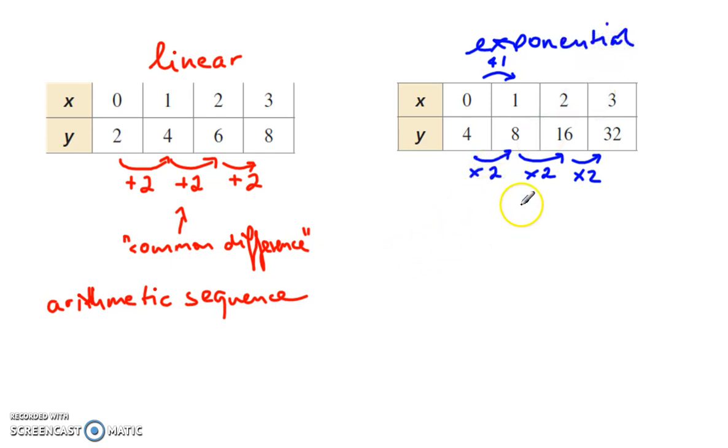And this right here, instead of the common difference, this is called the common ratio. The reason they call it a ratio is because I can take 8 and put it over 4. I take the next number and put it over the previous number, and that gives me 8 to 4, gives me that factor. So the common ratio between these two, 8 divided by 4, gives me 2. And so this is a geometric sequence.